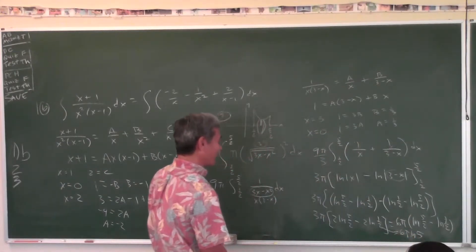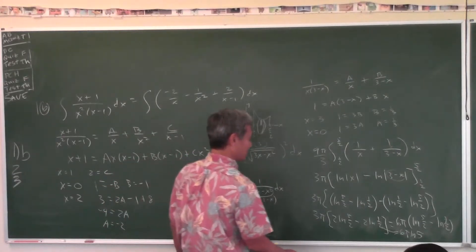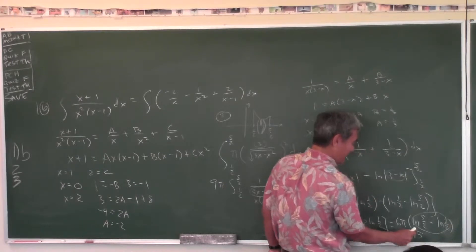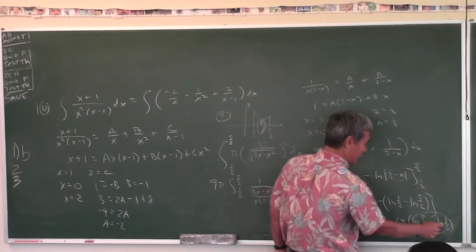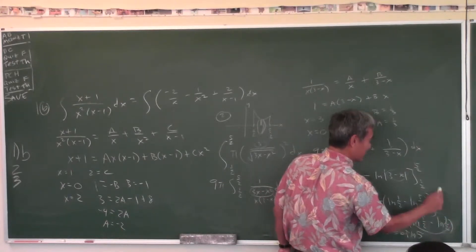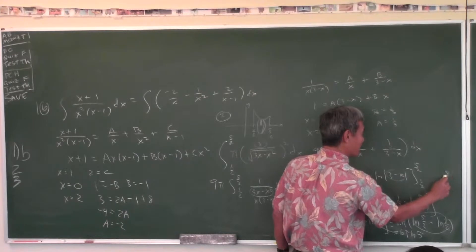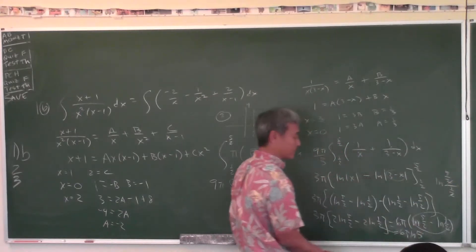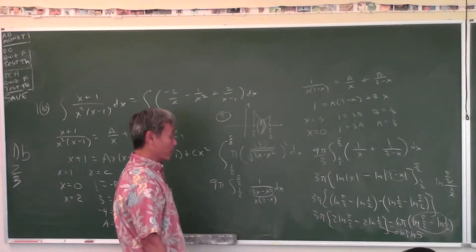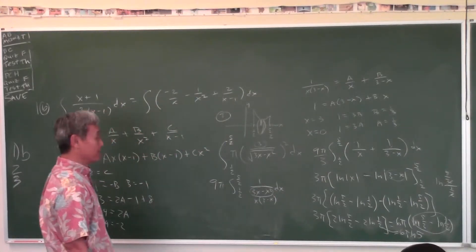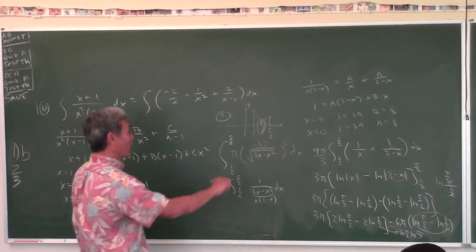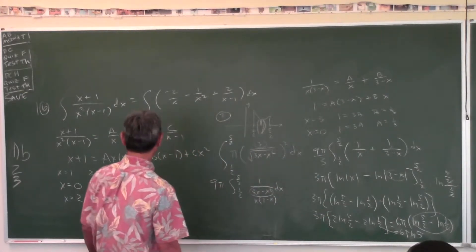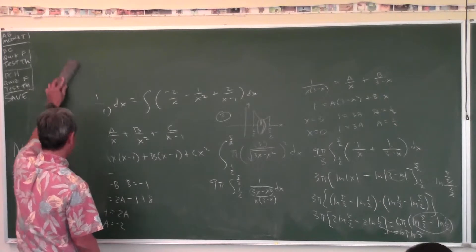The final answer is 6π times natural log 5. Because ln(5/2) minus ln(1/2) equals ln(5/2 ÷ 1/2) equals ln(5). You have to be able to simplify to pick up the answer on the exam. If you can't simplify — c'est la vie.